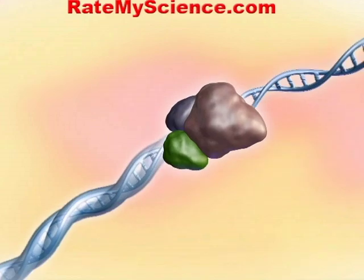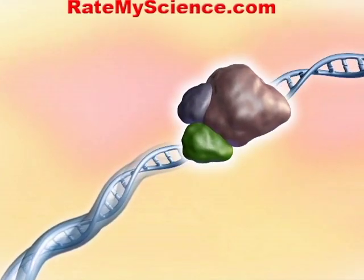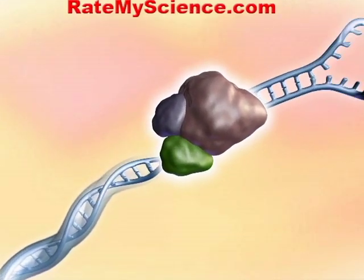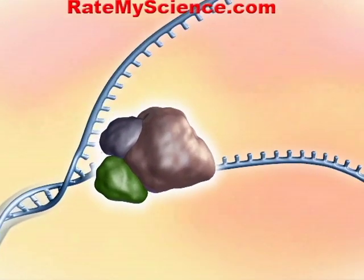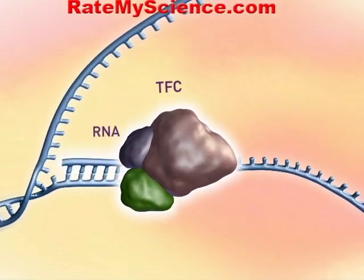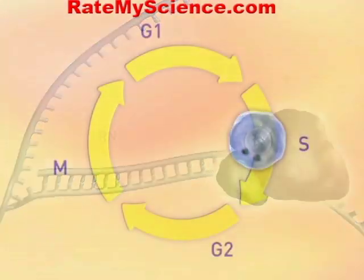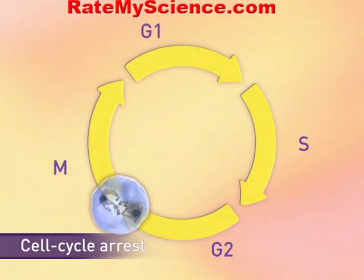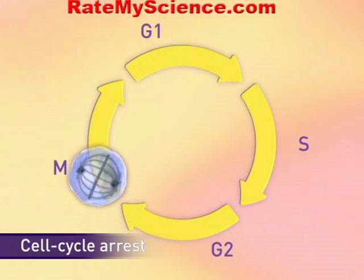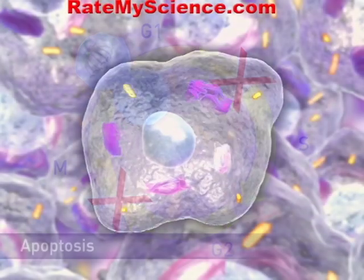HDAC inhibition allows for the accumulation of acetyl groups on the histones, resulting in uncoiling of DNA within chromatin, an open chromatin structure and transcriptional activation of genes.